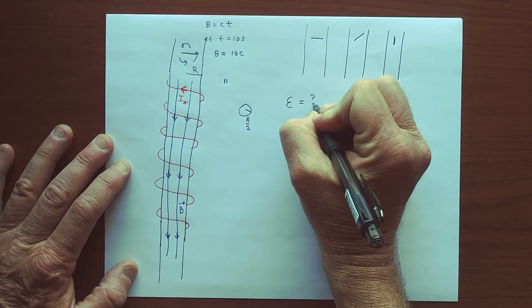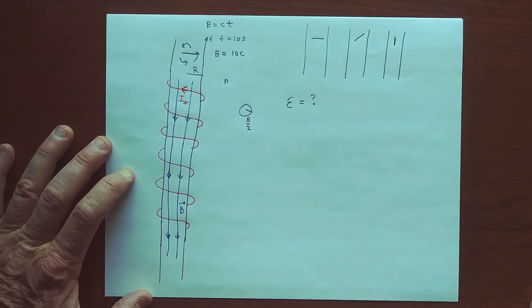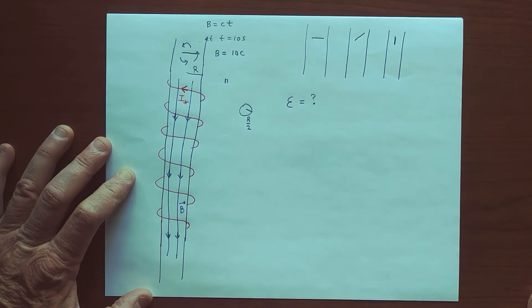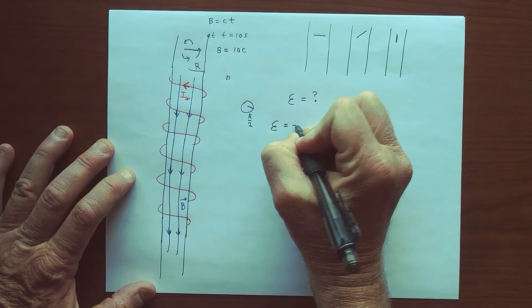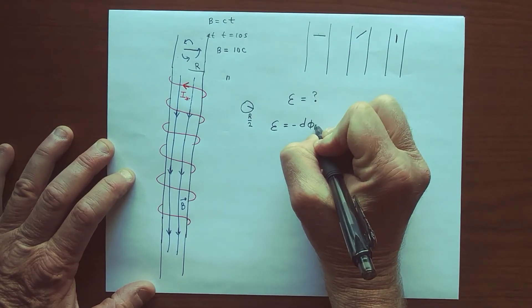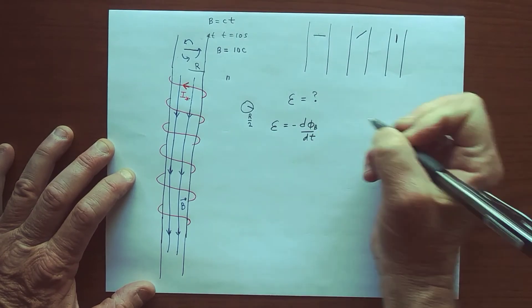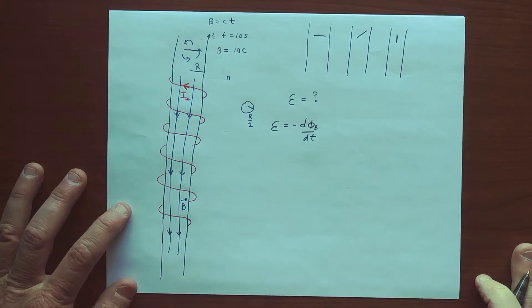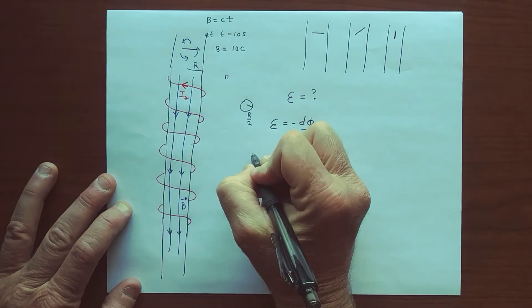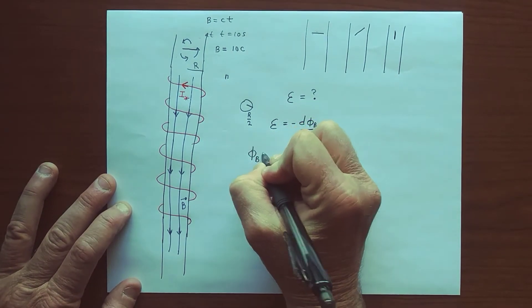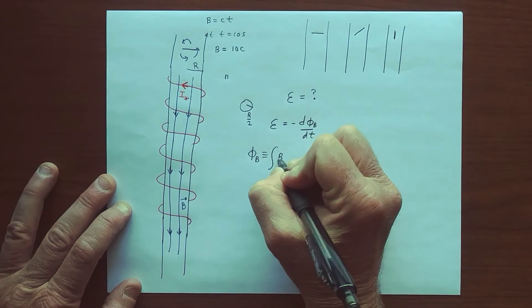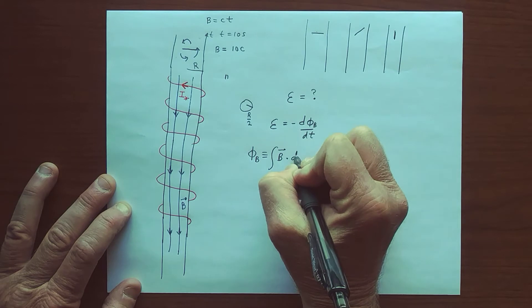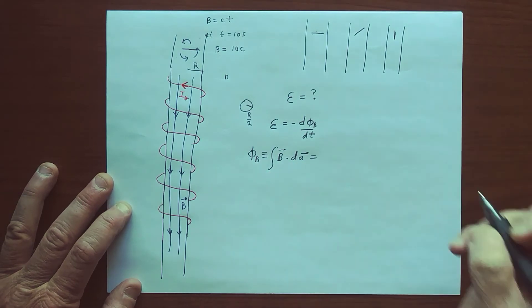And the question is, what is the EMF induced in this coil? So again, EMF, we start with what EMF is, which is minus the time derivative of the magnetic flux. So it's a two-step process. First, let's find the magnetic flux, which by definition is the integral of the magnetic field over the surface.